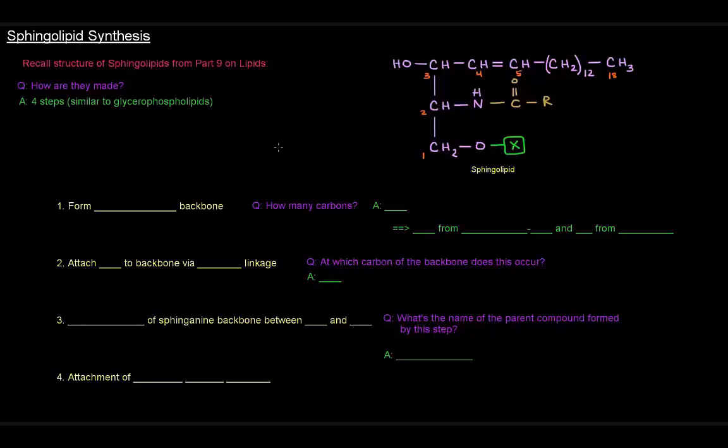So how are these things made? Well, there's four steps. In that sense, they're similar to glycerophospholipids because there's also four steps to make those. The first thing we have to do is form a sphingosine backbone.